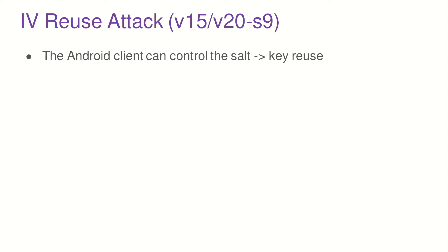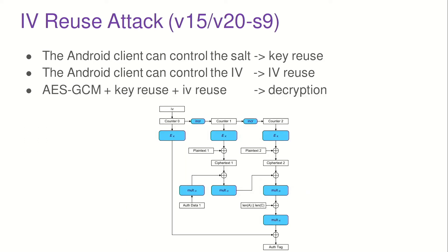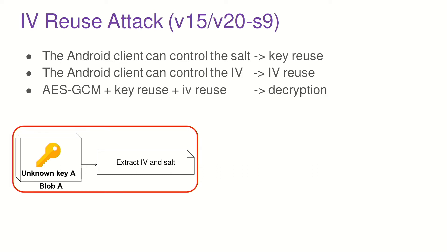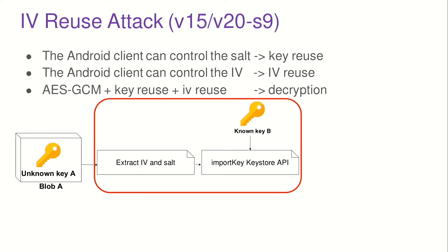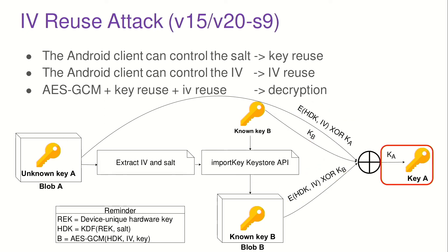Looking at the Samsung S9: the Android client can control the salt because all fields hashed into it are controlled by the normal world. We also found that Android can control the IV — normally randomly generated inside TrustZone, but you can specify a field saying 'please use this IV.' Unsurprisingly, with counter-mode encryption with key reuse and IV reuse, we can decrypt things. We take a wrapped key, extract the IV and salt used for encryption, import a new key whose value we know, require encryption to use the same salt and IV, XOR everything together, and recover the key.